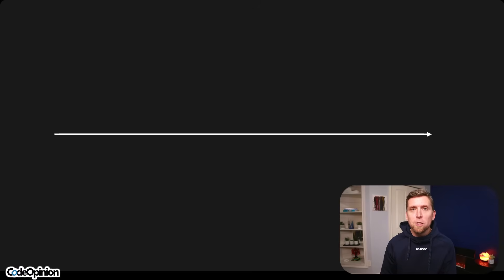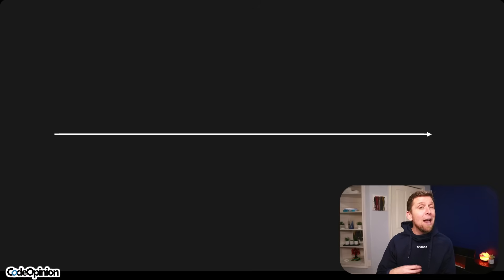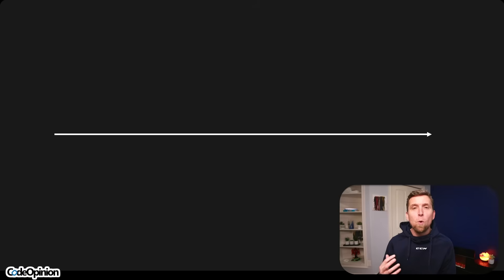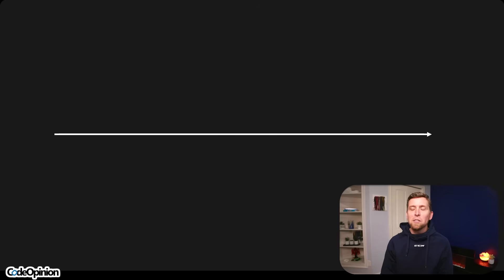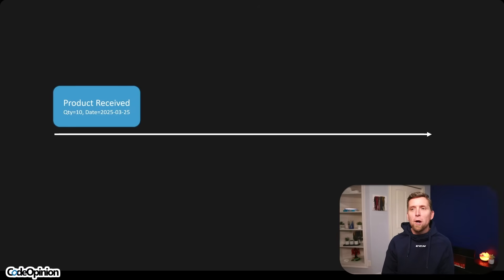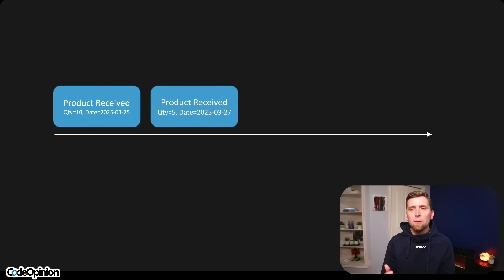Another alternative is doing pre-computation — having a model of data already ready for when a request comes in, so we don't have to do all that composition at runtime. I'll illustrate this with event sourcing, though it does not require event sourcing. So we have some events coming in: in our warehouse, product received — we receive 10 products of a particular SKU, say a stapler. Then we receive five more, so now we have 15 in our warehouse.